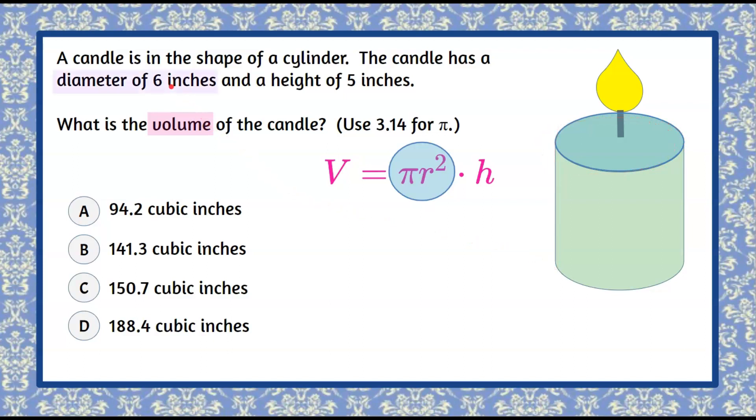Now let's identify what's given in the problem. We were told the diameter is six inches. Diameter goes from edge of a circle through the center to the other edge and that entire length is six. Then we're also told that the height of the cylindrical candle is five inches.